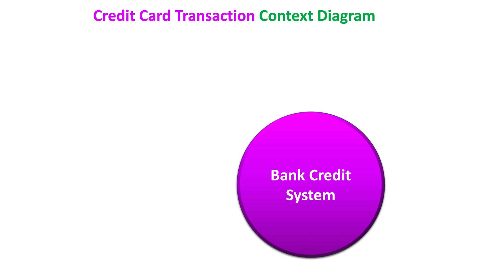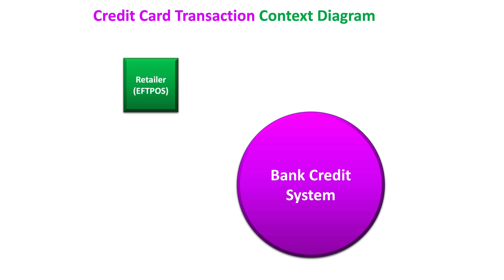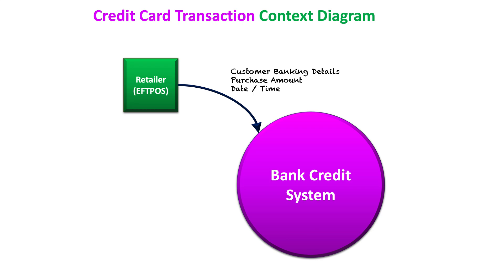The system is part of the bank, so we won't be referring to the bank directly. Our external entity here is not going to be a customer — it's more than likely going to be a retailer that the customer is purchasing from. Their system, most likely through their FPOS system, is going to be communicating with the bank. When the customer makes a credit transaction, the retailer's FPOS system will send through the customer's banking details, the purchase amount, and the date and time of the purchase. The bank will then respond to the retailer and provide the funds for the purchase.